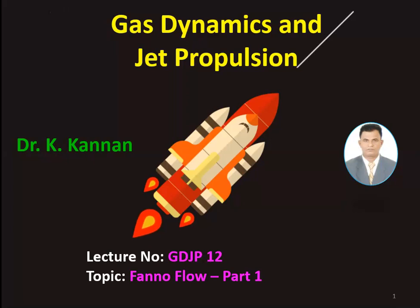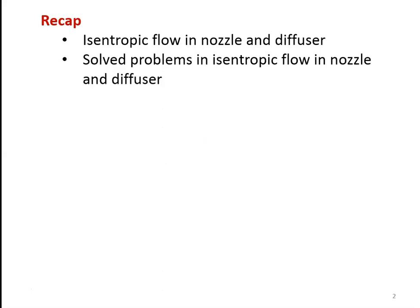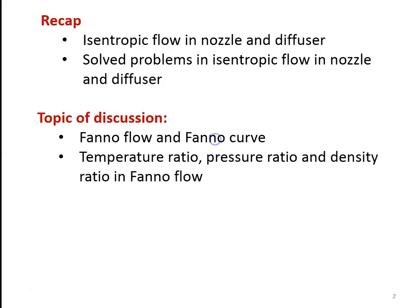The topic for discussion in this lecture is Fanno flow, Part 1. In the earlier lecture, we discussed the isentropic flow in variable area duct — isentropic flow in nozzle and diffuser — and we solved problems in isentropic flow in nozzle and diffuser. In this lecture, we will be discussing Fanno flow.